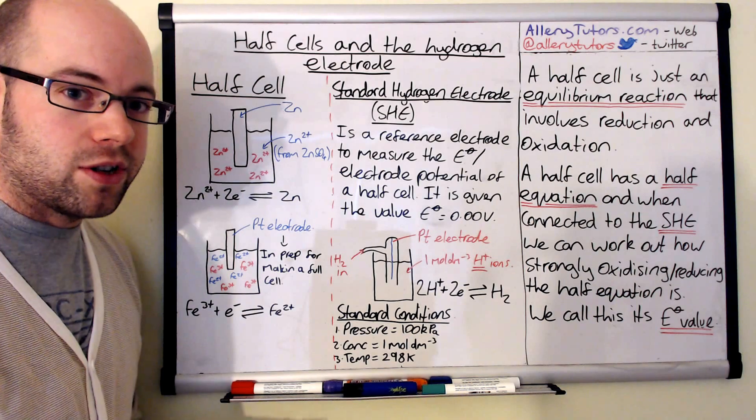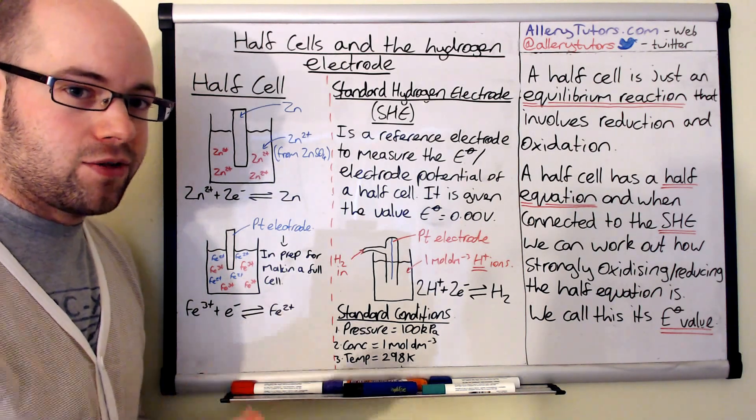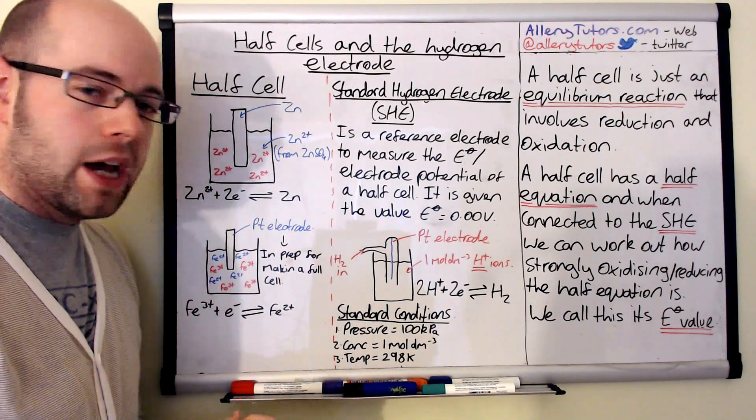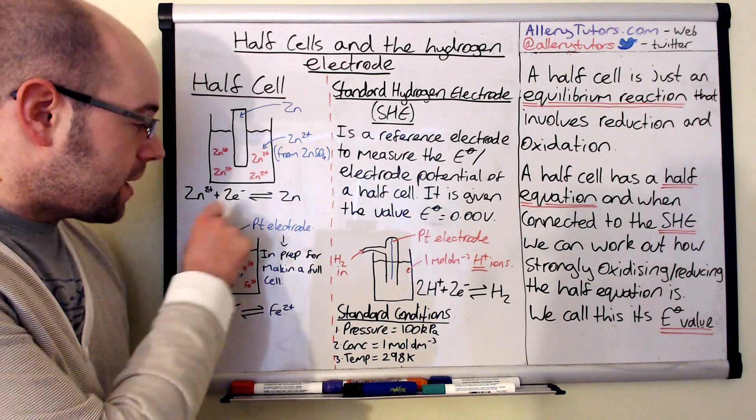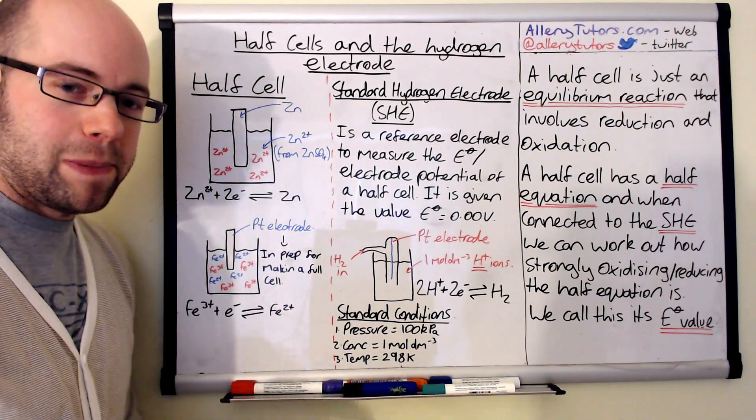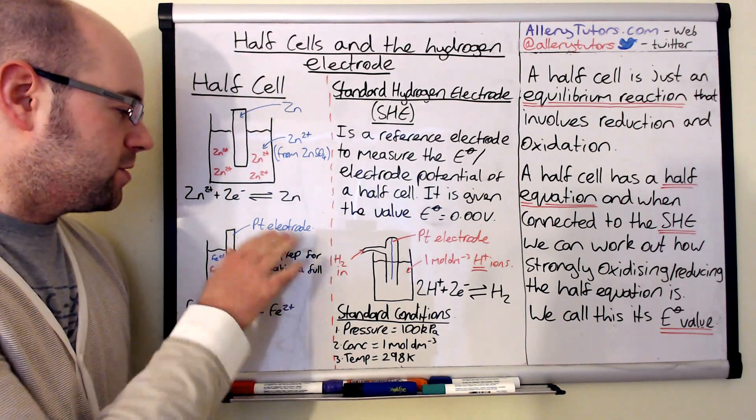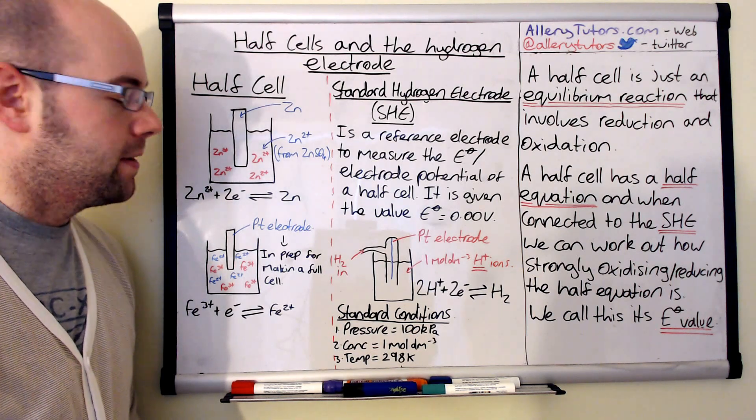Platinum is useful because it's inert and it doesn't react with any of the ions in here, and it's a good conductor of electricity. That's crucially what you want when you connect it to another half cell. Obviously, the downside is that platinum is very expensive and it's not a cheap metal whatsoever.